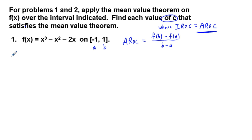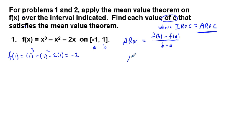I'm going to work on the left and figure out what those values are. We're going to find f of b, which is f of 1: that's going to be 1 cubed minus 1 squared minus 2 times 1. That's going to be equal to 1 minus 1 minus 2. 1 minus 1 is 0, minus 2 gives us negative 2. So f of b equals negative 2. Now we're going to subtract f of a, which is f of negative 1.